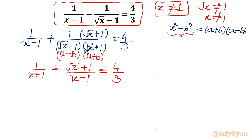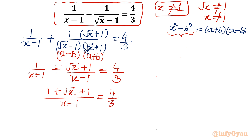Since the denominator is identical, I will write the equation as (1 plus root x plus 1) over (x minus 1) equal to 4 over 3. The numerator simplifies to root x plus 2, and the denominator is x minus 1, so we have (root x plus 2) over (x minus 1) equal to 4 over 3.